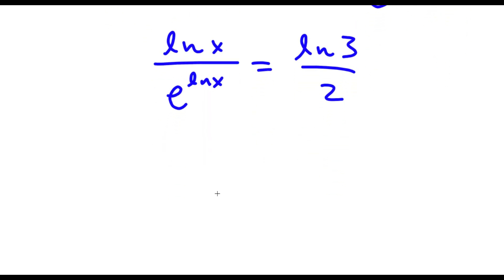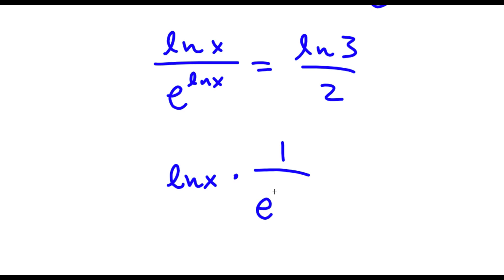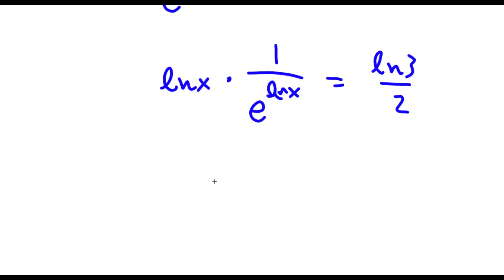Now, ln x over e to the power of ln x — and 1 over e to the power of ln x is the same thing as e to the power of negative ln x.